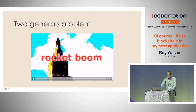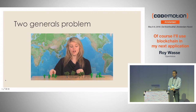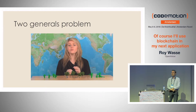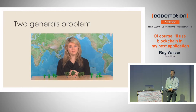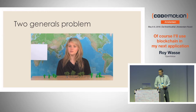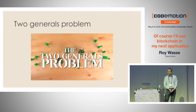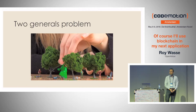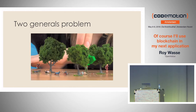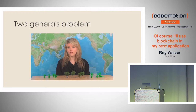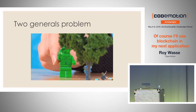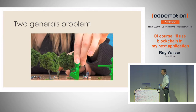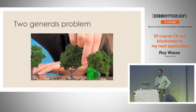Two armies are preparing to attack a city. Each army is led by a general and the only way of communicating is by messenger. One general receives a message indicating the other is ready to attack. But how does the general who delivered the message know it was received? What if the messenger was captured? An acknowledgment message must be sent back — but if that messenger never makes it, how will they both know they both know? Any message could fail. An infinite number of messages would be required. What should these two generals do?